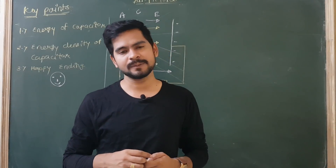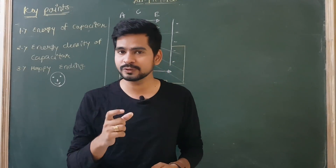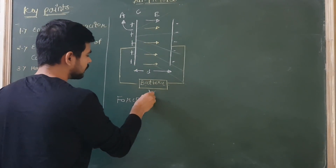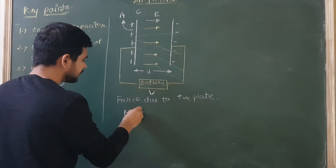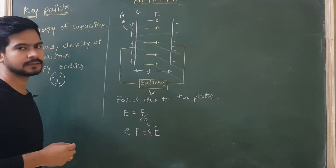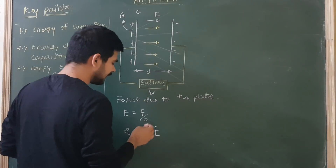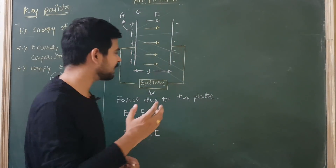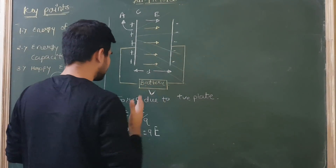Our main concern is to find energy. Energy means the ability to do work, and work means force into displacement. So let's find out the force first. Force due to positive plate: E = F/Q, hence F = Q × E. So the force experienced by the positive plate or the negative plate is F = Q × E.